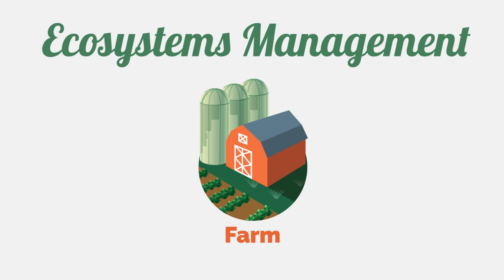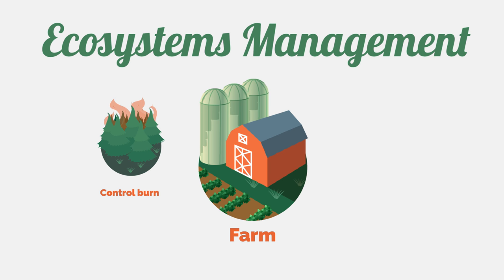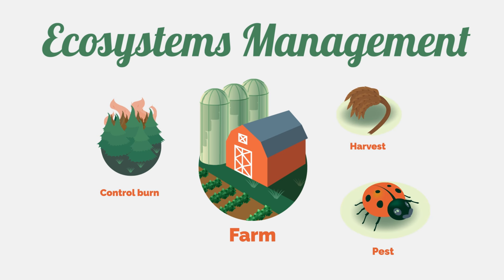Ecosystem management is achieved through a variety of measures, including controlled burns, pesticide application, and selected harvesting, or removal of a certain resource.